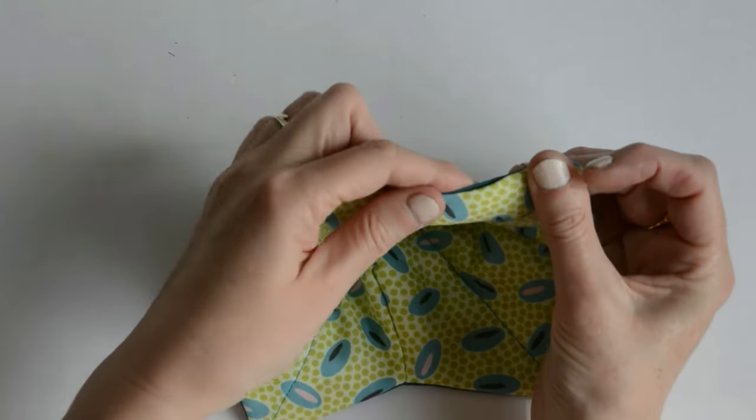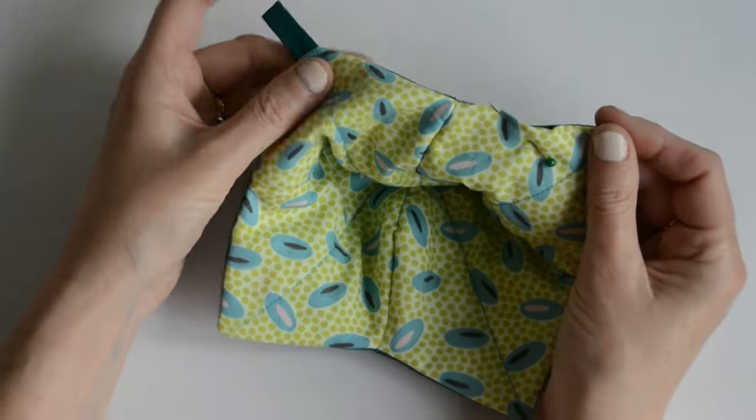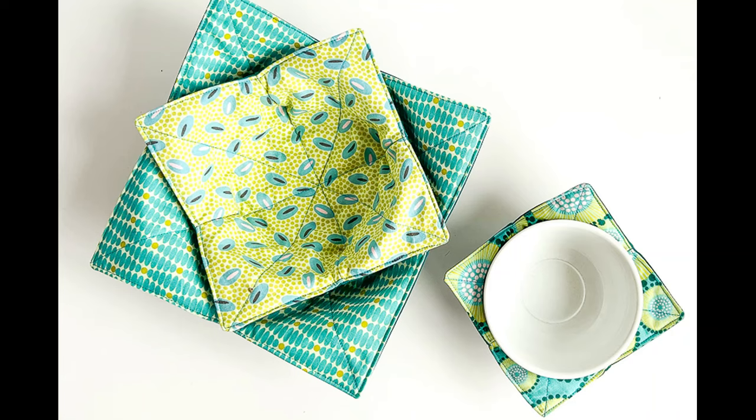So now we've got a turning gap we're going to give that a really good press all the way around and pin that turning gap in place. And then we're going to top stitch to finish the bowl cozy. Thanks for watching, I hope you've enjoyed.